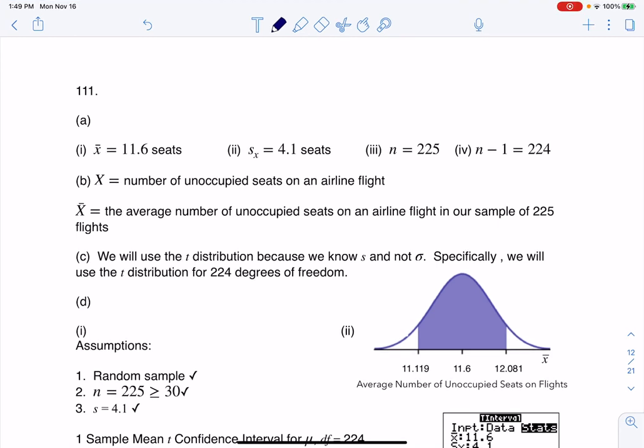Hey Math43, I had a question coming out of chapter 8, number 111. Here we were told that we had an airline wanting to estimate the average number of unoccupied seats over the past year. So they had a sample of 225 flights and were keeping track of the number of unoccupied seats. We were told the sample mean was 11.6 and the sample standard deviation was 4.1.